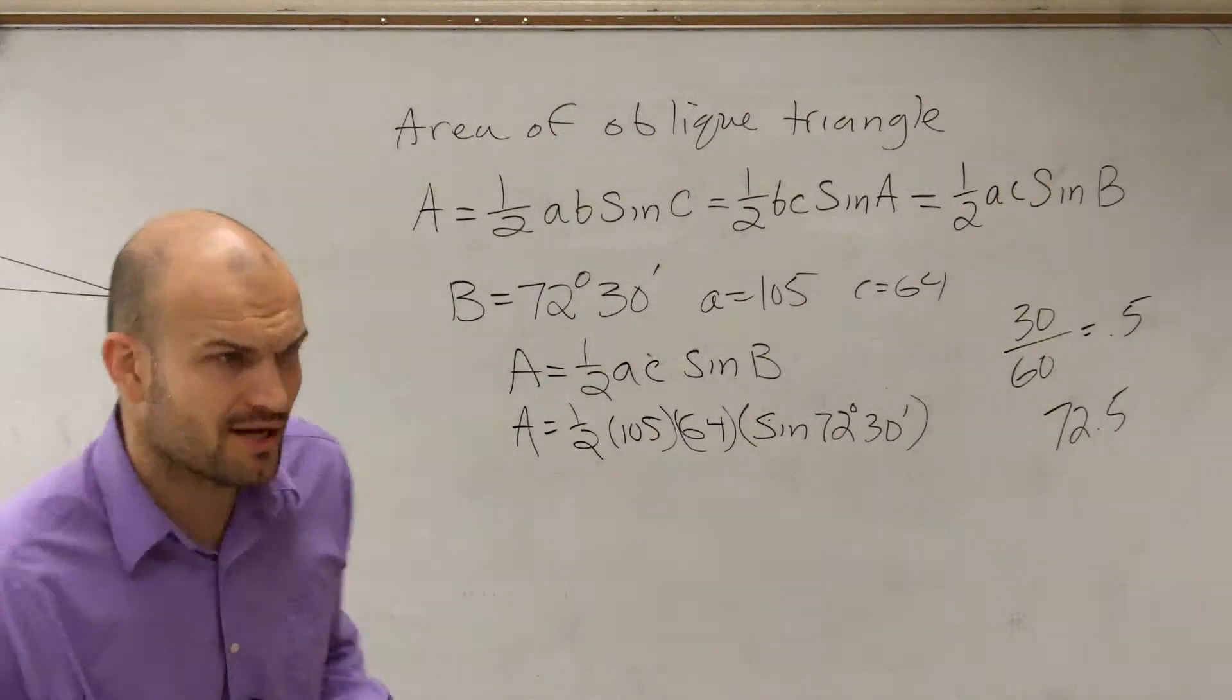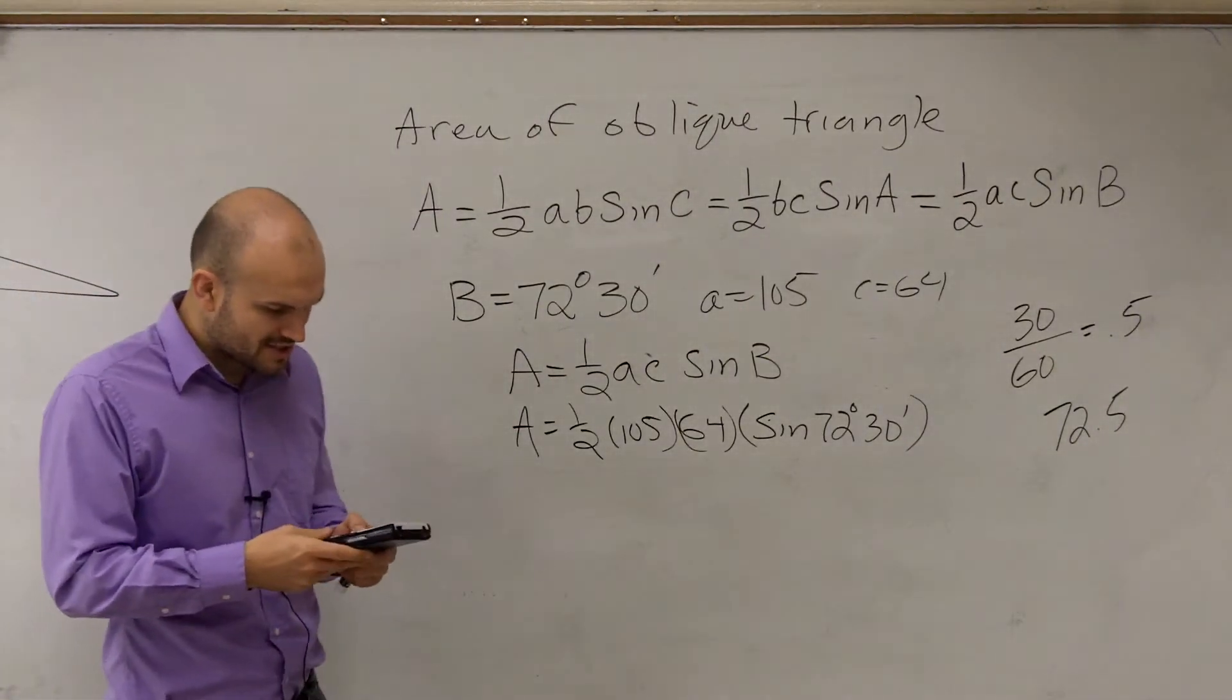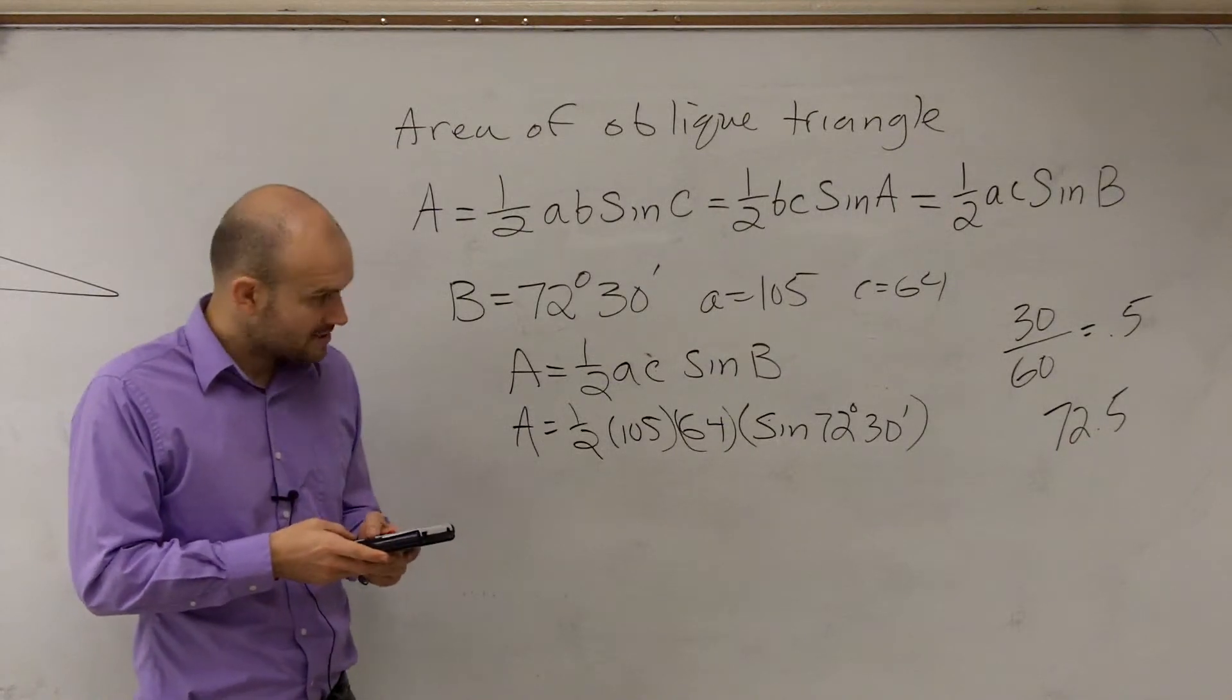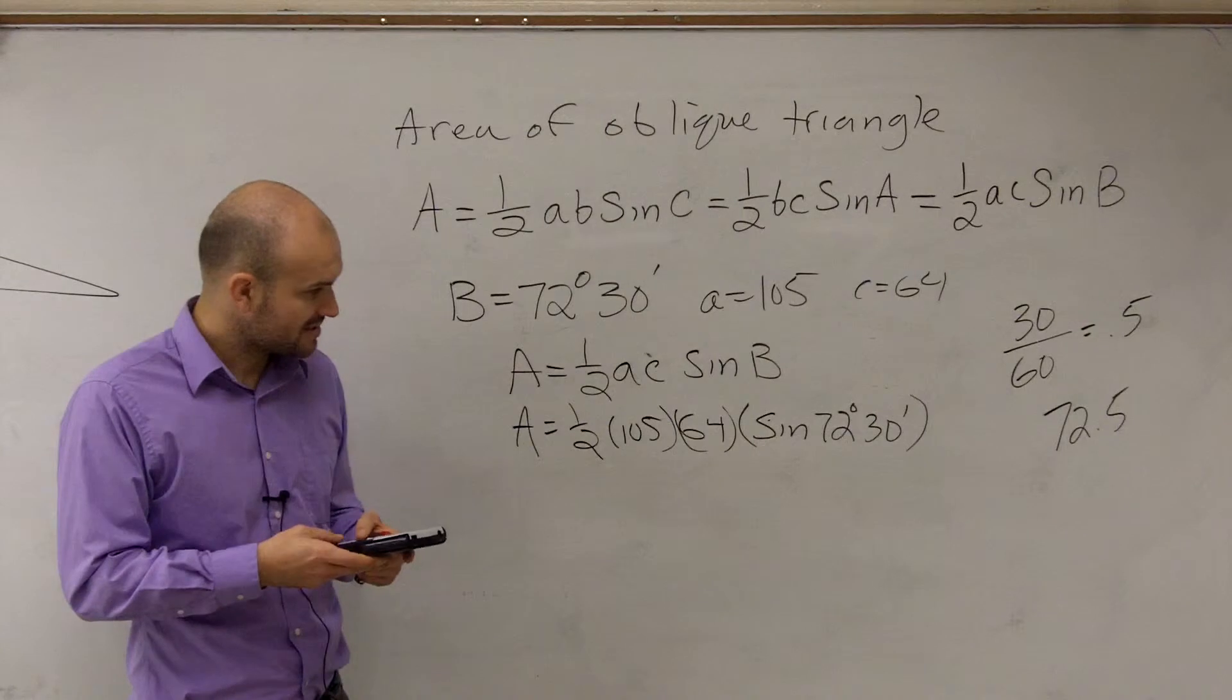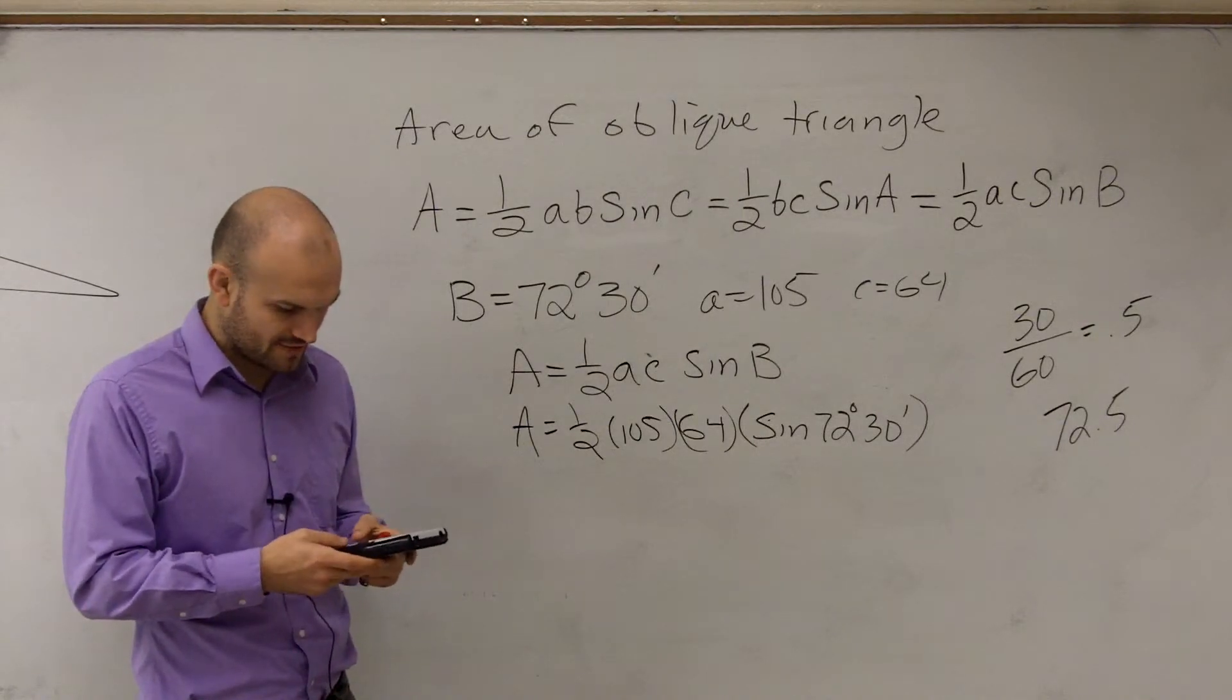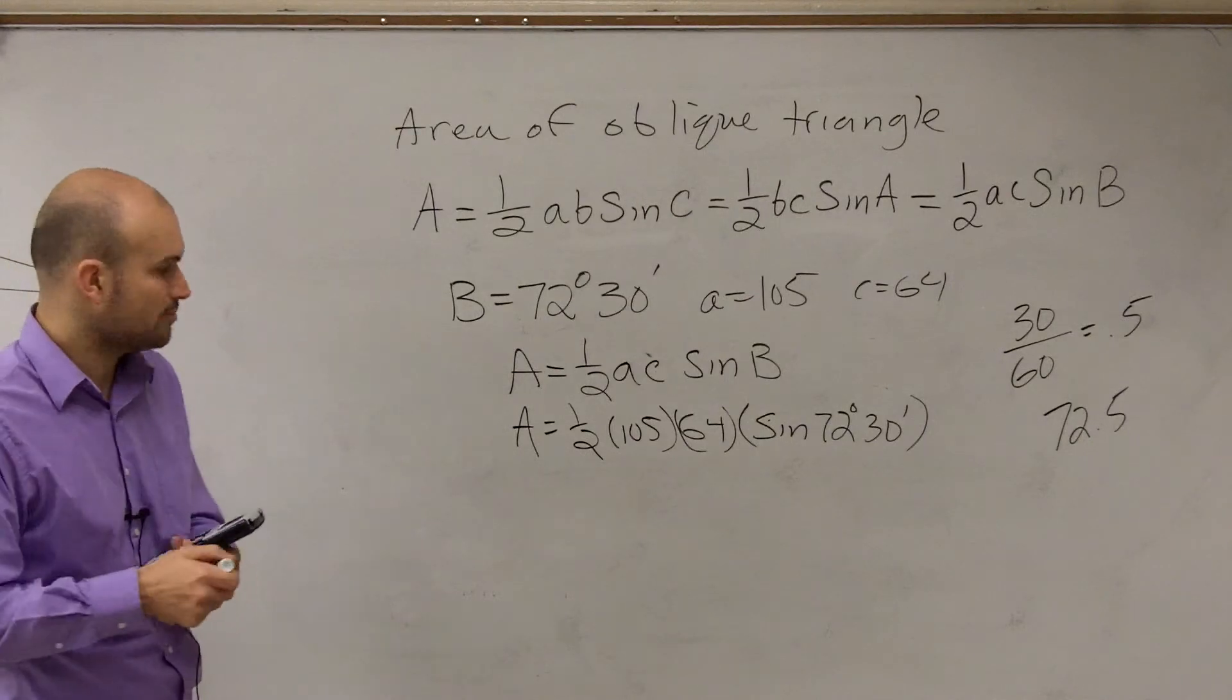Now you just put them into your calculator and evaluate. I'll do sine of 72.5, multiply it by 64, times 105, times 0.5, which is going to be 52.5.